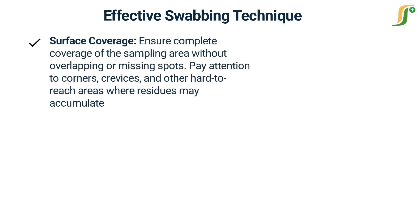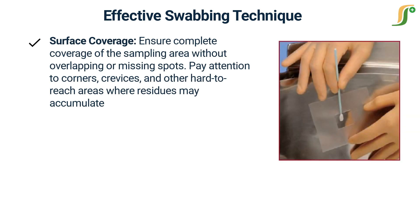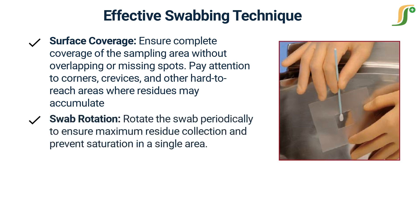Surface coverage. Ensure complete coverage of the sampling area without overlapping or missing spots. Pay attention to corners, crevices, and other hard-to-reach areas where residues may accumulate. Swab rotation. Rotate the swab periodically to ensure maximum residue collection and prevent saturation in a single area.